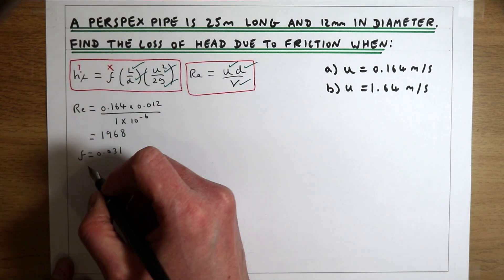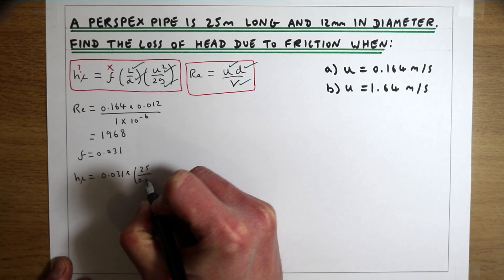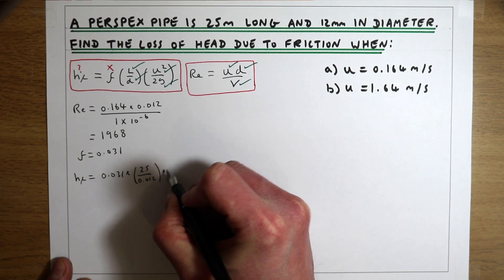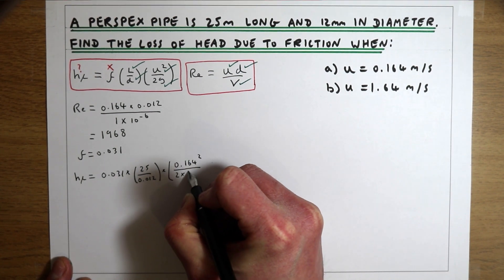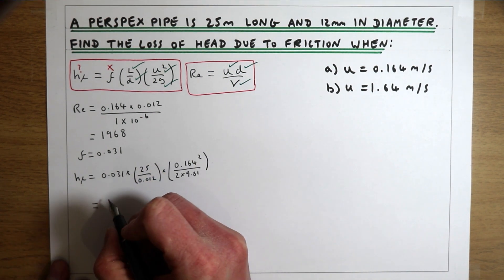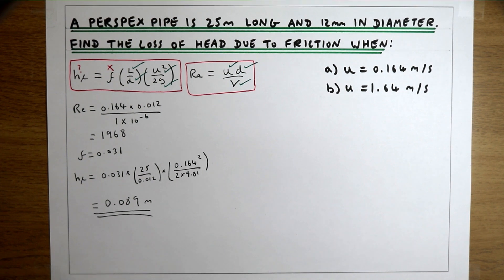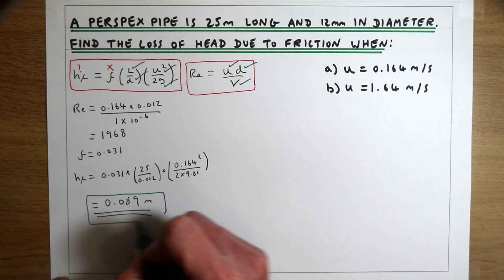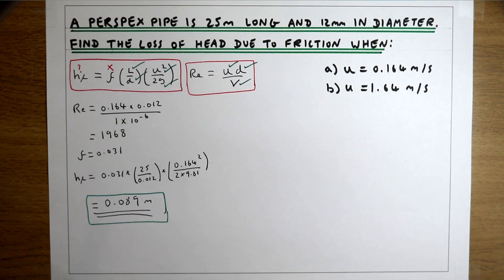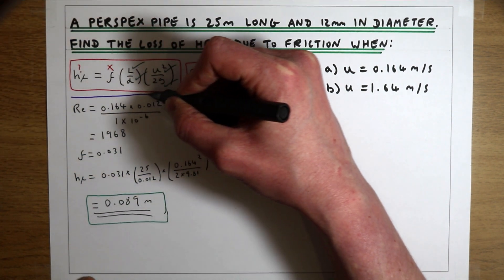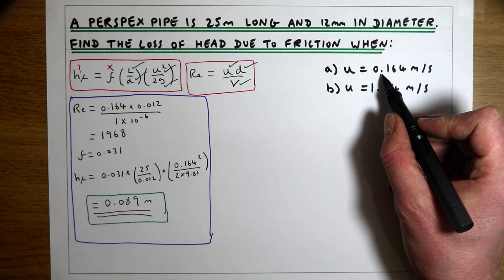Now we have everything to solve the equation: HF = 0.031 × (25 / 0.012) × (0.164² / (2 × 9.81)), which gives us a loss of head for the first part of 0.089 metres. As our water travels down this 25-metre pipe, friction is causing a head loss of 0.089 metres, where the velocity is 0.164 metres per second.